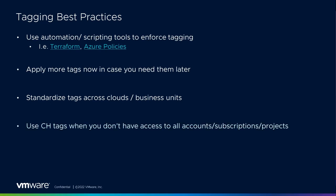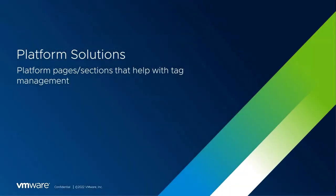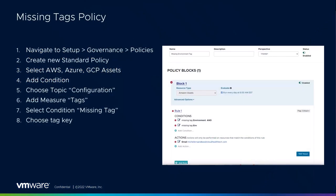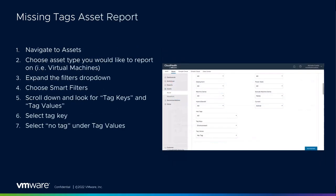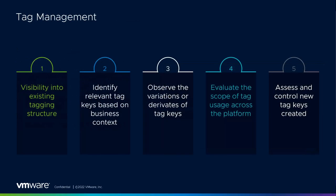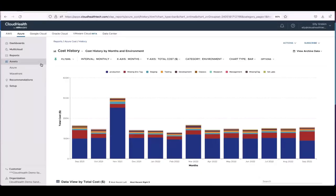CloudHealth also has CloudHealth-specific tags you can use if you don't have access to all accounts, subscriptions, and projects. These do not feed back to the cloud provider but are available within the CloudHealth platform. We have three main tools: a missing tags policy, the assets report, and a tag management page which gives you visibility into your existing tag structure — showing tag keys, derivatives, where they're being used, and when they were created.